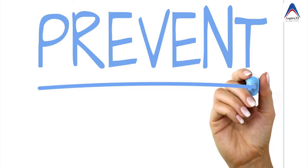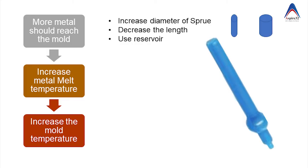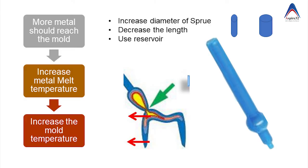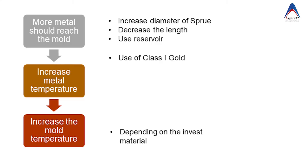To prevent localized shrinkage porosity, increase the amount of metal reaching the mold space by increasing the diameter of the sprue or decreasing its length — both increase the velocity of metal into the mold space. You can also use a reservoir, which holds extra molten metal alloy. As the junction between the sprue and wax pattern is the last to shrink, the reservoir compensates for that shrinkage, preventing porosity. Increasing the metal melting temperature and mold temperature also helps.